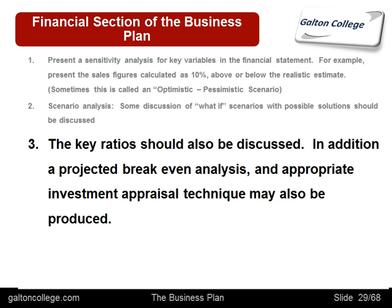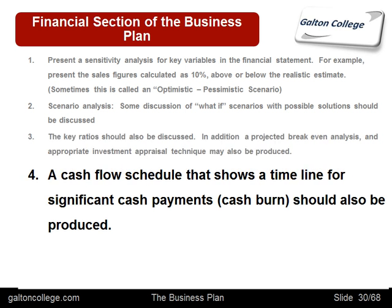A projected break-even and investment appraisal technique could also be used, bearing in mind that they're looking into the future and the future estimates are based on assumptions, and the assumptions need to be made explicit — just state what the assumptions are. A cash flow schedule could also be important, particularly a projected one in the shorter period, perhaps one to two years. Major items of expenditure could be anticipated or known to be likely in the short run — for example, business tax might be known because the government has announced what it will be in the next year or two. Big payments such as those are known as cash burn.